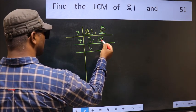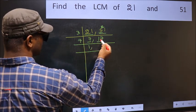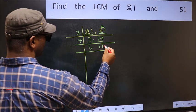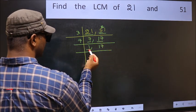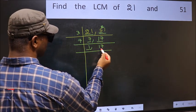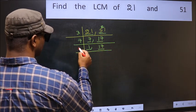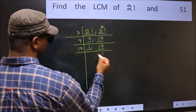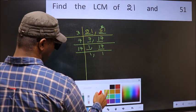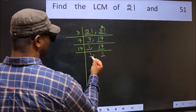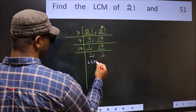The other number 17 is not divisible by 7, so write it down as it is. Now we got 1 here, so focus on the next number 17. 17 is a prime number, so 17 once is 17. We got 1 in both places.